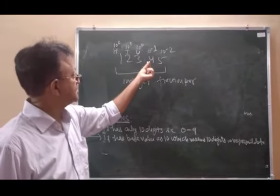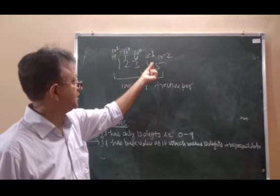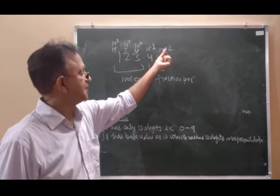After the fraction, 4's positional value is 10 raised to the power minus 1, and 5's positional value is 10 raised to the power minus 2.